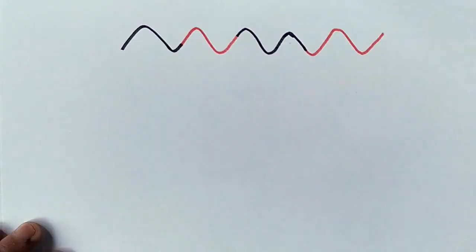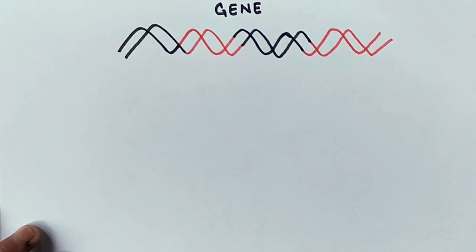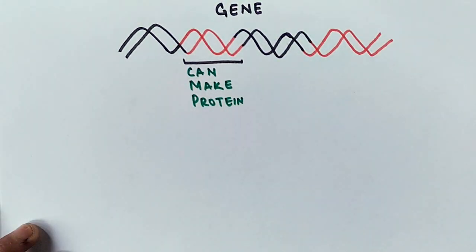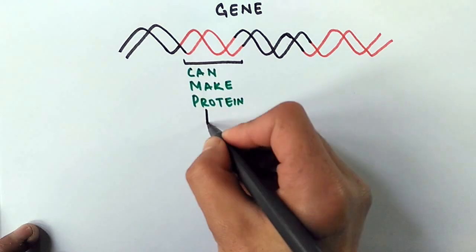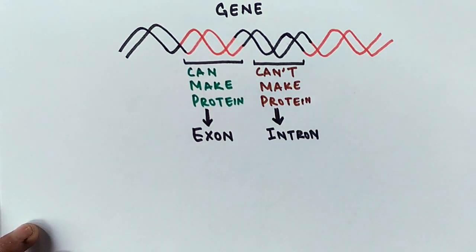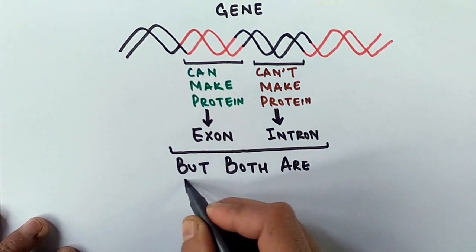Suppose we have a gene here, it contains a sequence that can make a protein, but it does not contain it in a continuous manner but in a discontinuous manner. So the portion of a gene represented in red here can make a protein, so we call it exon. And a gene portion represented in black cannot make a protein, it's called intron.